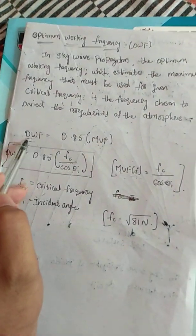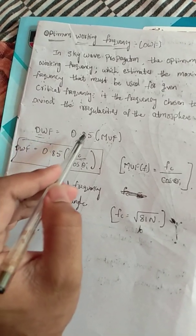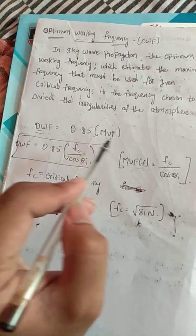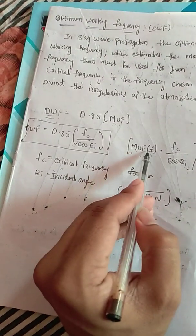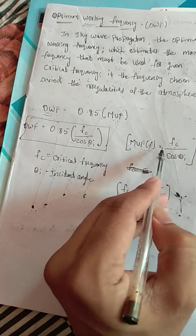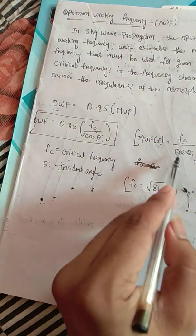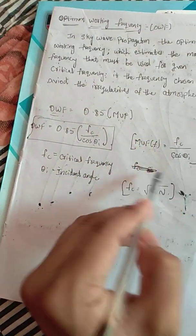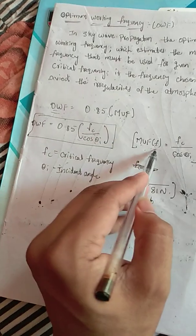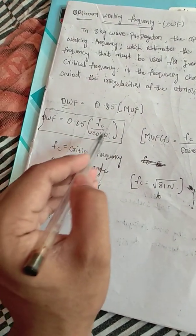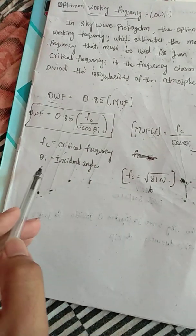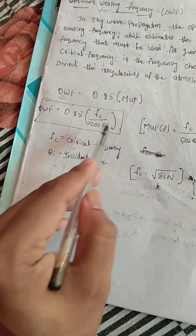The Optimum Working Frequency (OWF) is equal to 0.85 times MUF. From yesterday's class, we finalized that MUF equals fc divided by cos(θi), where fc is the critical frequency and θi is the incident angle. Substituting this into the OWF formula gives: OWF = 0.85 × MUF = 0.85 × fc / cos(θi).